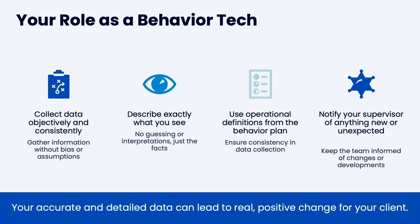Your role is to collect data objectively and consistently — describe exactly what you see, no guessing or interpretations. We're not going to say they're angry or upset with the teacher; we write what we see and hear. Use the operational definition from the behavior plan when you're in treatment. During the FBA process, you might not have a perfect operational definition yet — that's okay, we often modify the behavioral definition to be more precise. Always tell your supervisor of anything unexpected that happens during the observation.